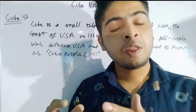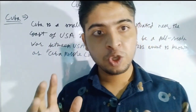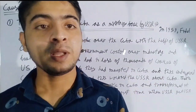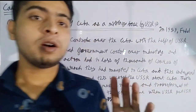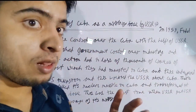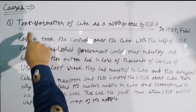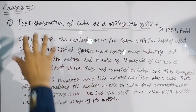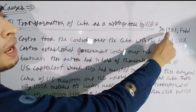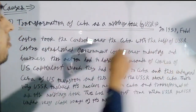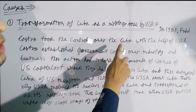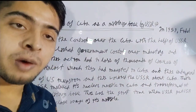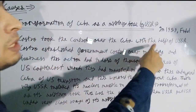Now let's explain the causes of the Cuba Missile Crisis. The first cause is the transformation of Cuba as a military base by USSR. In 1959, Fidel Castro took control over Cuba with the help of USSR.